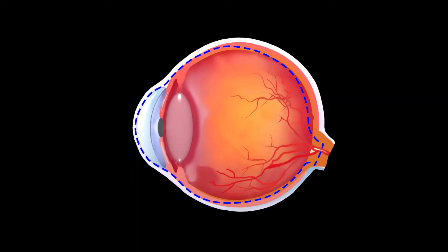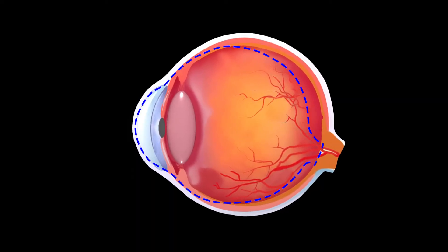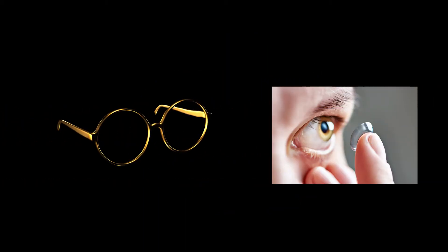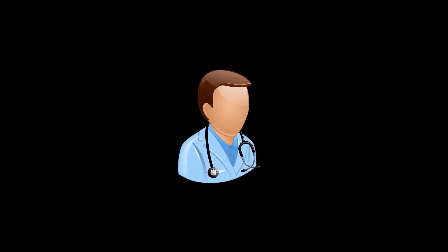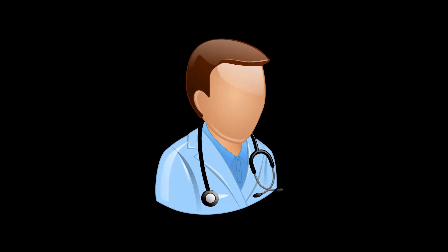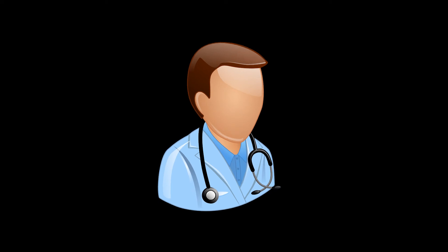Most of the time, myopia stabilizes in early adulthood, but sometimes it may continue to progress with age. Fortunately, myopia can be corrected and even slowed down with new modalities. Your doctor will talk to you about the different options that may be right for your eyes.